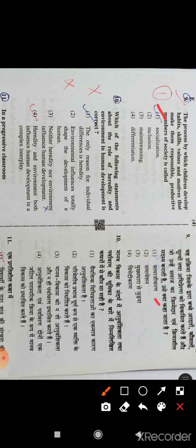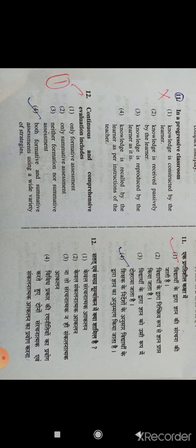Question number 10: Which of the following statements about the role of heritage and environment in human development is correct? Option number 4: heredity and environment influence human development in a complex interplay.